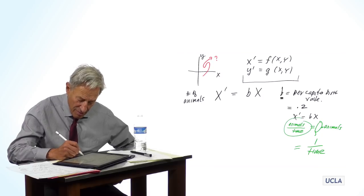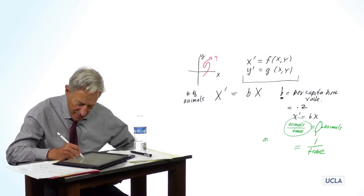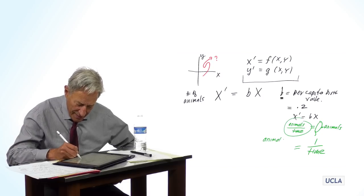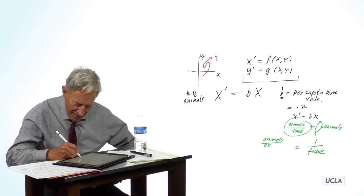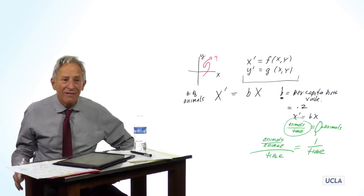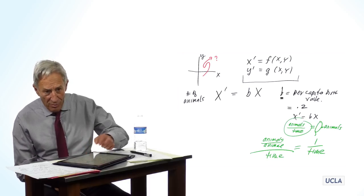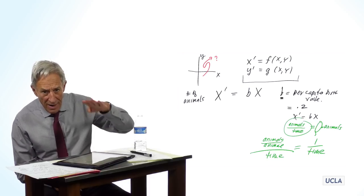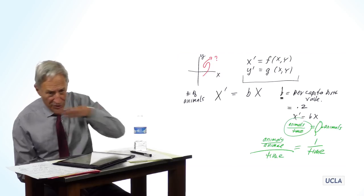And perhaps a better way to see it is to see a birth rate. What is a birth rate? A birth rate is, so to speak, animals per animal per time.